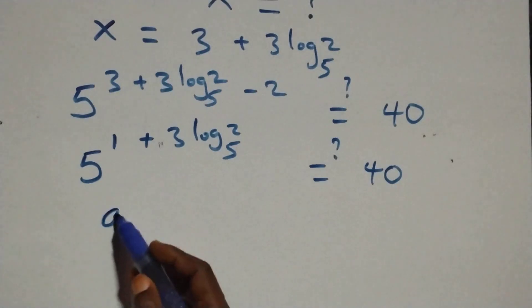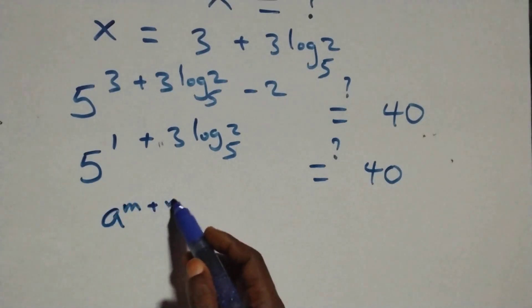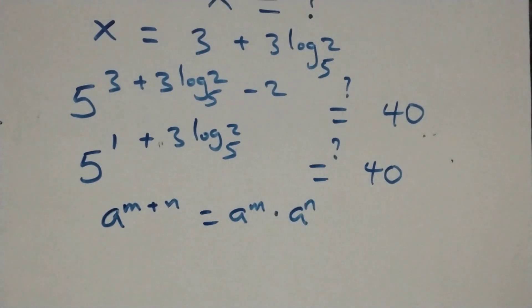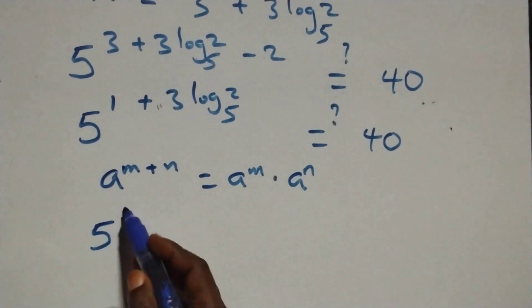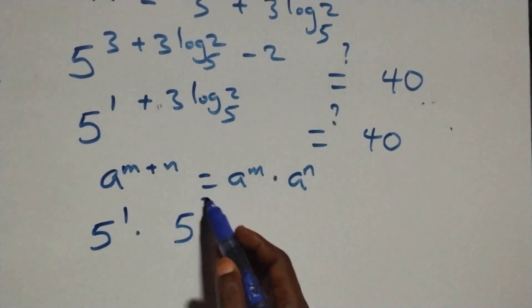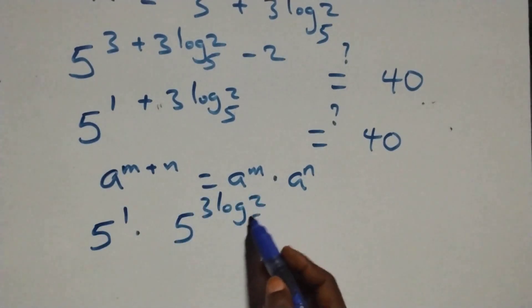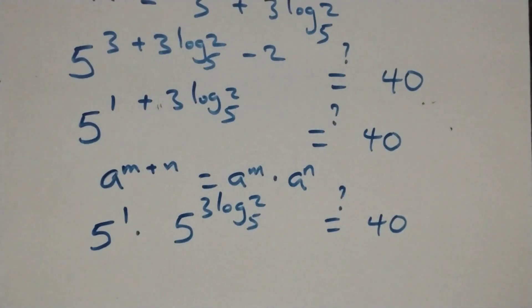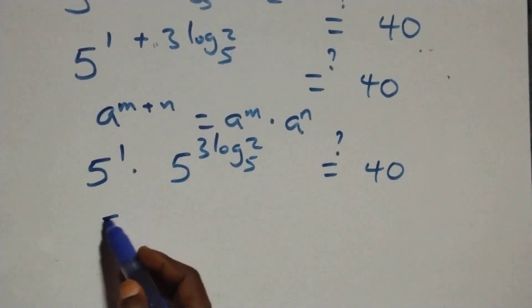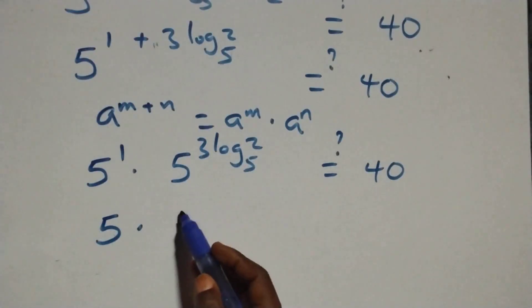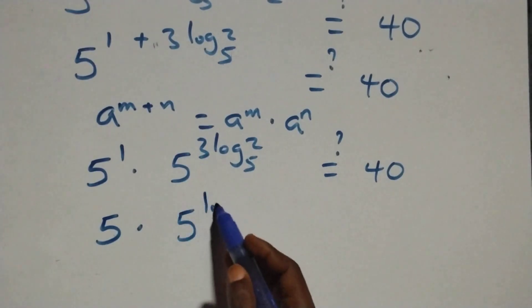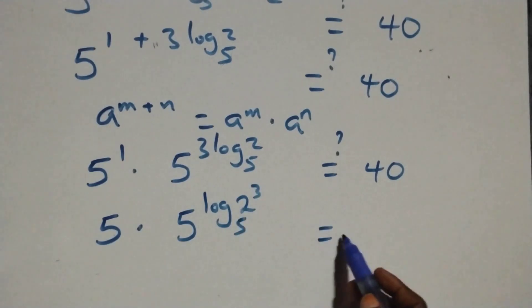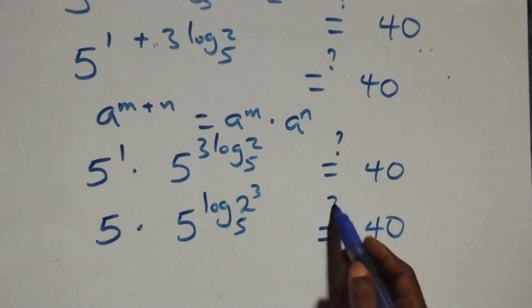Using the rule a raised to power n plus n equals a raised to power n times a raised to power n, we split this as five times five raised to power three log two base five equals forty. Reversing the power rule of logarithm, three log two base five becomes log of two cubed base five, so we have five times five raised to power log two cubed base five equals forty. Since two cubed is eight, this is five times five raised to power log eight base five equals forty.